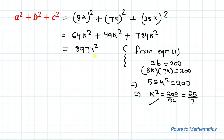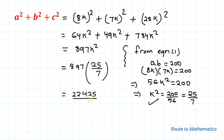Substituting back, a² + b² + c² = 897 × (25/7) = 22425/7. I hope you understood the solution. Thanks for watching — please subscribe to my channel and click the bell icon for more interesting videos. Thank you!